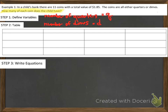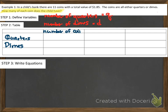We are going to have two different attributes — quarters and dimes. One thing we know is the number of coins. We use our variables to define the number of quarters, Q, and the number of dimes, D. The problem doesn't tell us exactly how many quarters there are, so we put Q, which we'll find later. D is the number of dimes — we don't know that yet either. The last row is always going to be total, and the total number of coins is 11.